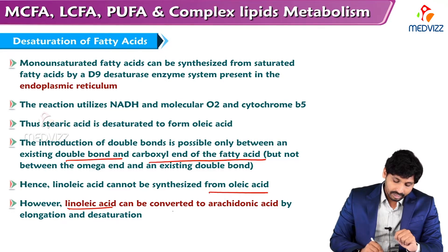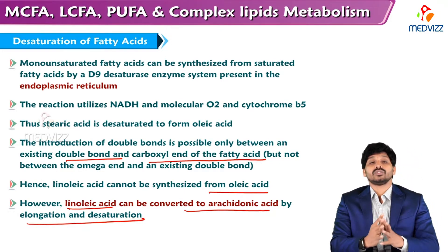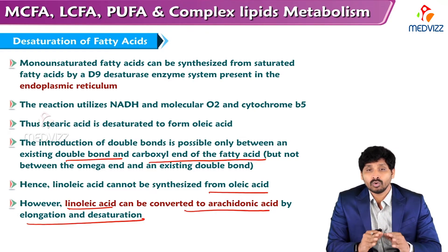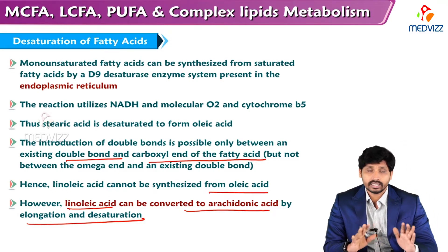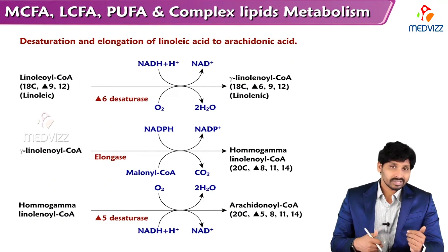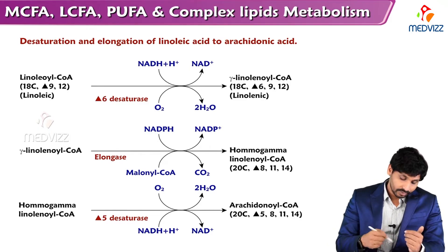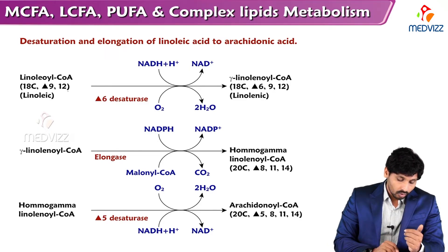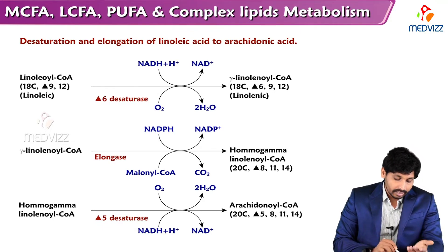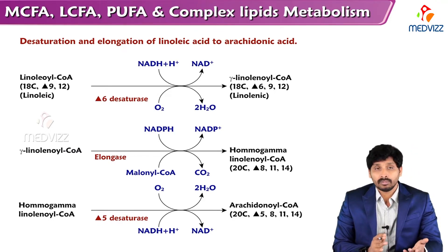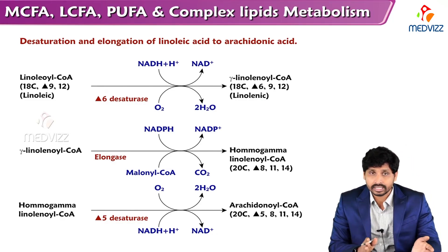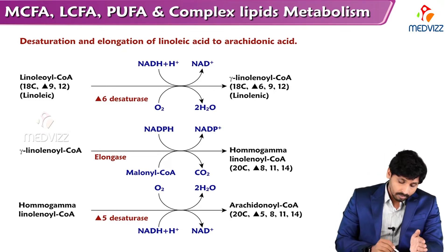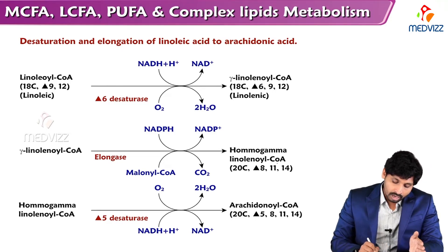Linoleic acid can be converted to arachidonic acid by elongation and desaturation. Linoleic acid is an 18-carbon compound with 2 double bonds. It is converted to a compound with 3 unsaturation points, with an additional desaturation at the 6th position by the delta-6 desaturase enzyme. This gamma-linolenic acid is then converted into homo-gamma-linolenic acid.